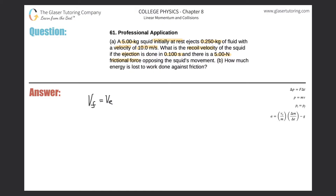we can use the rocket equation formula: the final velocity equals the ejection velocity times the natural log of the initial mass divided by the final mass. So that final velocity right after ejection is what we're looking for.